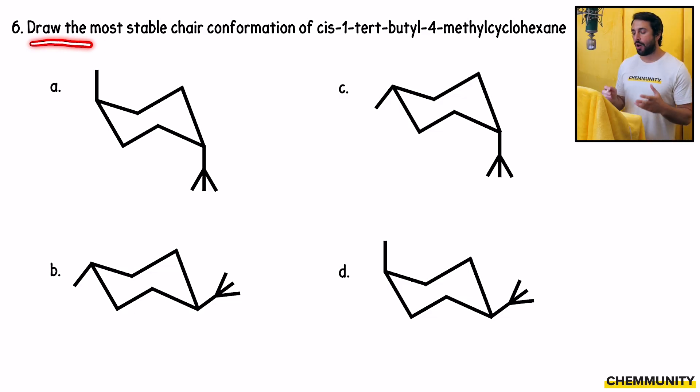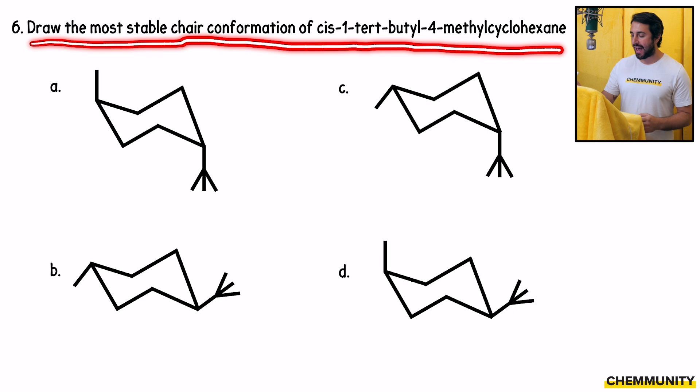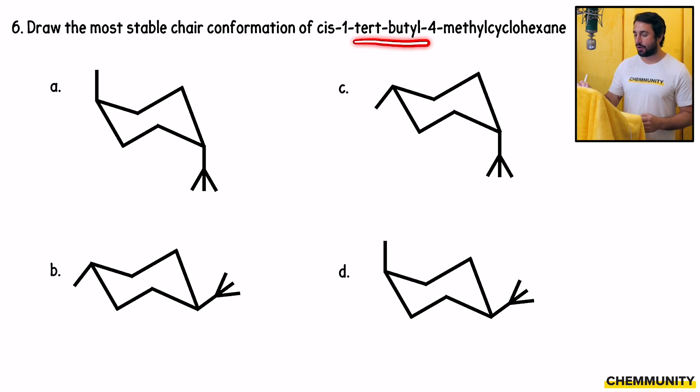Six says, draw the most stable chair conformation of cis-1-tert-butyl-4-methyl cyclohexane. We have to have a tert-butyl on carbon one, we have to have a methyl on carbon four, and they have to be cis to one another.